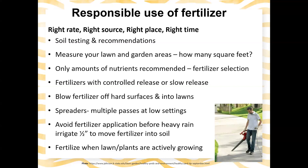Folks often ask how to calibrate their spreader. Sometimes there are recommendations on the fertilizer bag for a specific spreader, but if not, I encourage setting a really low gate setting — a small exit on the spreader — and making multiple passes. Otherwise you can end up over-fertilizing part of the yard and under-fertilizing another. It's best to avoid fertilizer application directly before a heavy rain. If you have the ability to irrigate, you can irrigate a half inch to move the fertilizer into the soil.